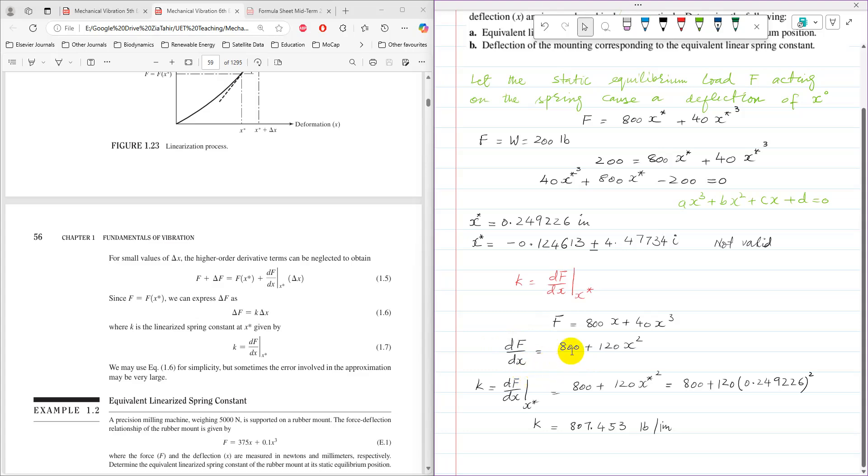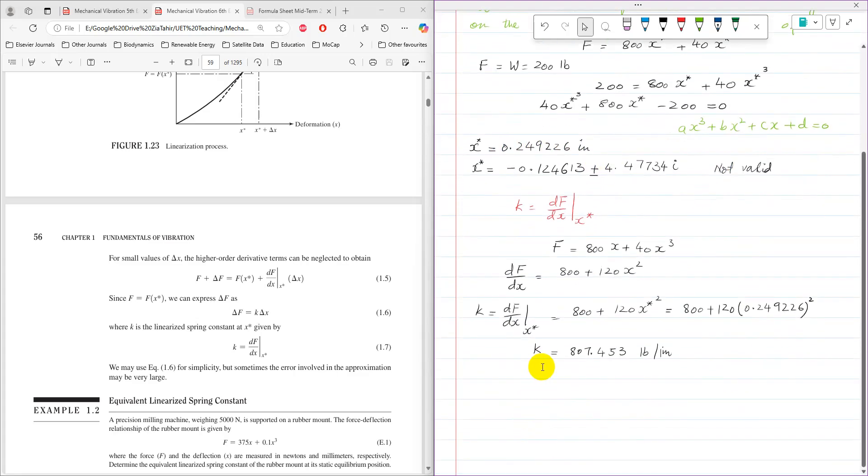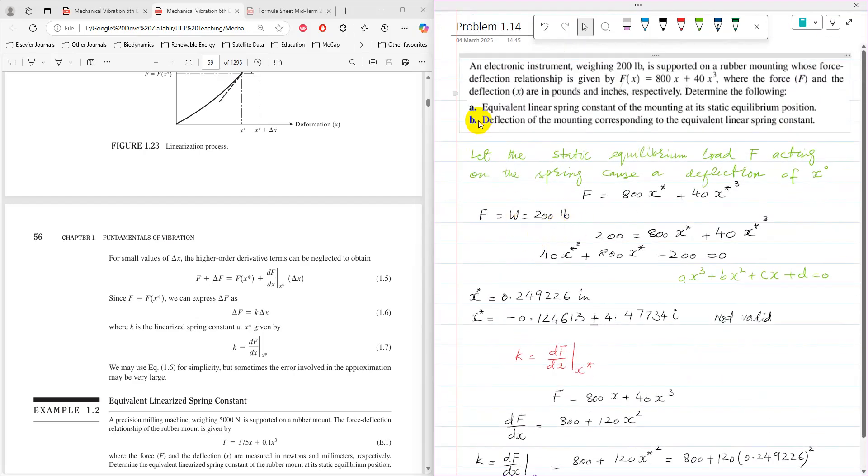Now the derivative df/dx is 800 + 120x² and then k using equation 1.7, k is the linearized spring constant. That is df/dx at x*, that is 800 + 120x*². After substituting the value of x*, this linearized stiffness of linearized spring comes at 807.453 pounds per inch.